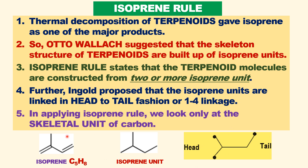This is isoprene. In applying the isoprene rule, please remember we only look at the skeletal unit of the carbon, not the double bonds. This is the head portion and this is the tail portion.